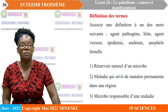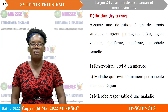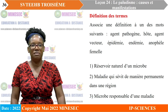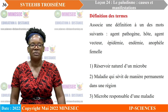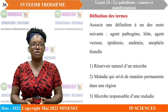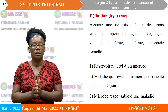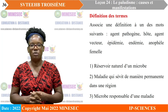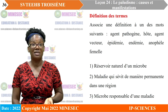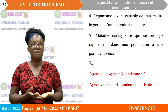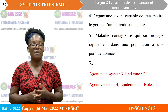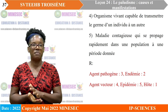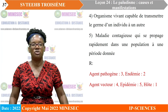Nous passons à la définition des termes. On demande d'associer une définition à l'un des mots : agent pathogène, hôte, agent vecteur, épidémie, endémie, anophèle femelle. Réservoir naturel de microbes : c'est un hôte. Maladie qui sévit de manière permanente dans une région : c'est une endémie. Microbe responsable d'une maladie : c'est un agent pathogène. Organisme vivant capable de transmettre le germe d'un individu à un autre : c'est un agent vecteur. Maladie contagieuse qui se propage rapidement dans une population à une période donnée : c'est une épidémie.